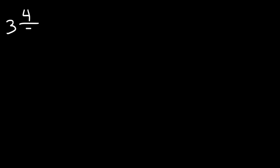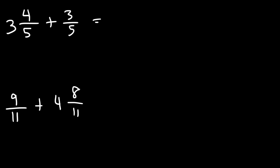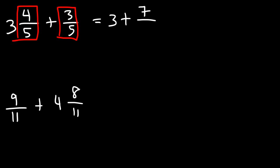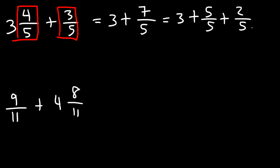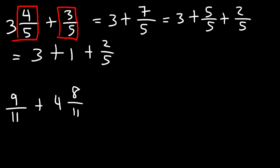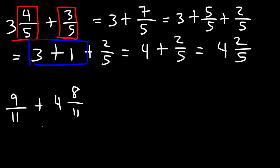For practice, go ahead and try these two examples: 3 and 4 fifths plus 3 over 5, and also 9 over 11 plus 4 and 8 elevenths. Let's begin by adding 4 over 5 and 3 over 5. 4 over 5 plus 3 over 5 is 7 over 5. Now let's break down 7 over 5 as 5 over 5 — and 7 minus 5 is 2, so the missing part will be 2 over 5. 5 divided by 5 is 1, so we have 3 plus 1 plus 2 over 5. 3 plus 1 is 4, so we have 4 and 2 fifths.